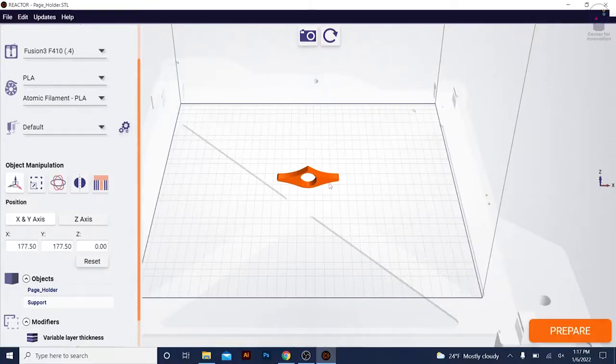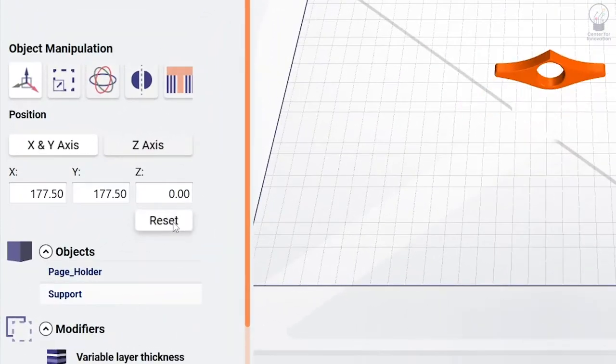You can move your object around the area of the plate either by clicking and dragging the object, or by typing in numeric values in the X, Y, or Z axis settings.